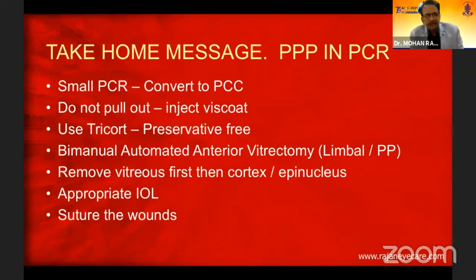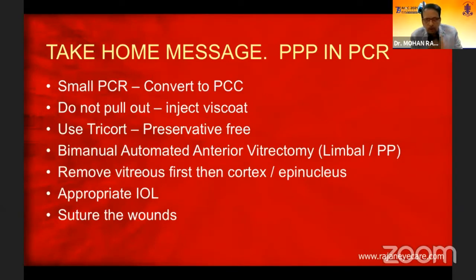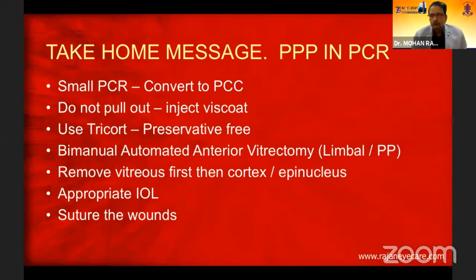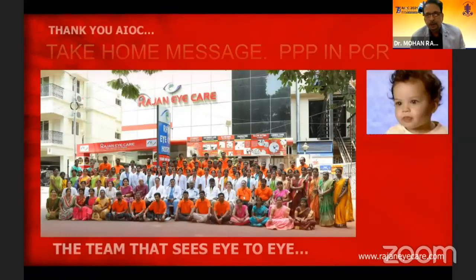The take-home message — PPP in PCR, preferred practice patterns in PCR: a small PCR, convert into a posterior capsulorrhexis. Do not pull out. Stabilize the anterior chamber by injecting viscoat. Use triamcinolone preservative-free. Once you come out of the eye, make sure you remove the vitreous first using bimanual automated anterior vitrectomy — either limbal or pars plana, whatever you're comfortable with. Remove the vitreous first, then the cortex and epinucleus, then perform appropriate IOL implantation depending on the capsular status. If the anterior capsule is intact, you can do an optic capture. Always suture the wounds when you have vitreous loss, because the incidence of postoperative endophthalmitis and leaking wounds is very high.